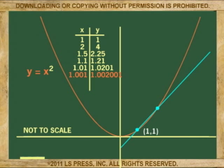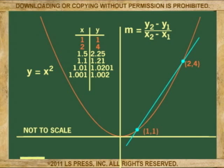Let's now find the slope of the first secant made by points one one and two four. Substitute the values in the equation and four minus one is three and two minus one is one. The slope of the first secant is three.